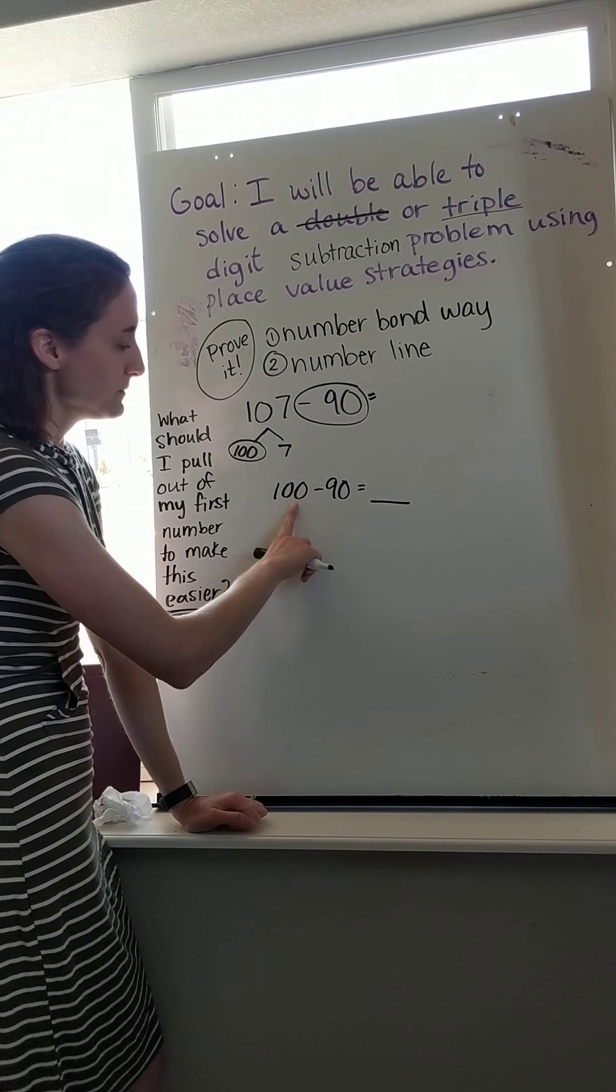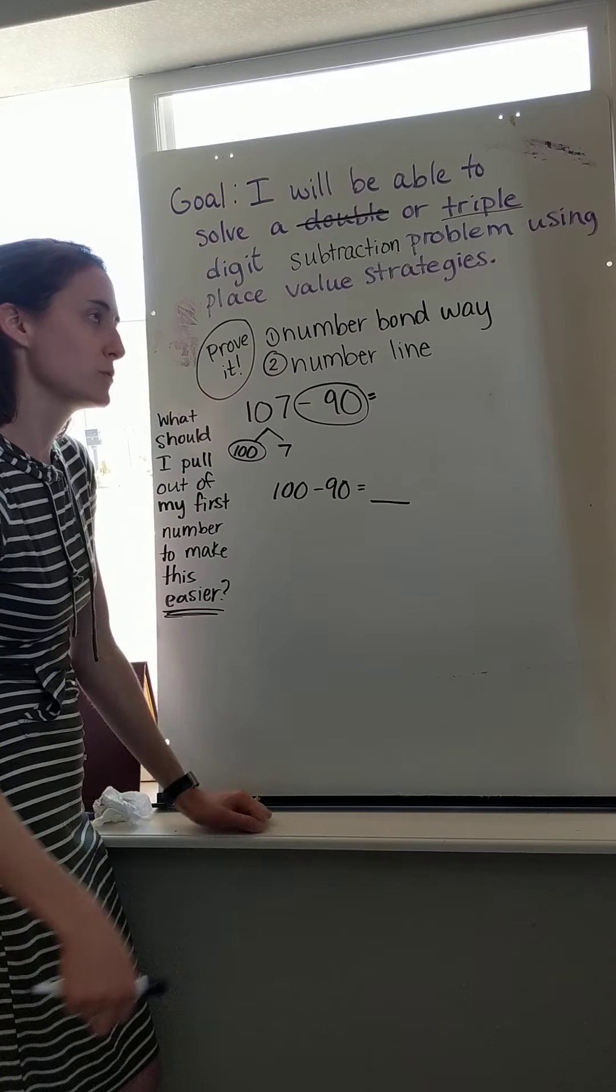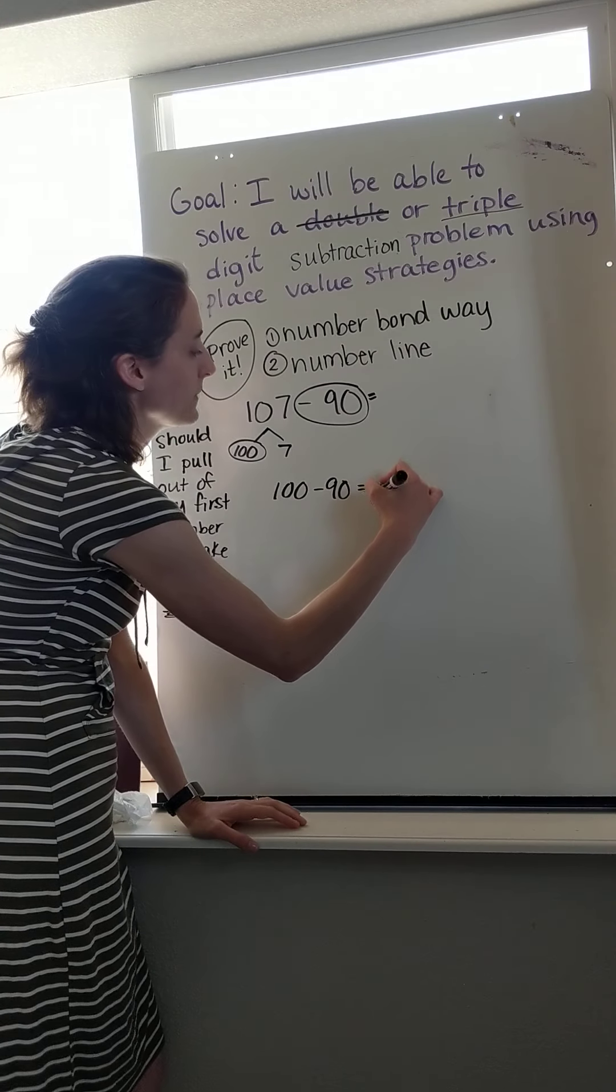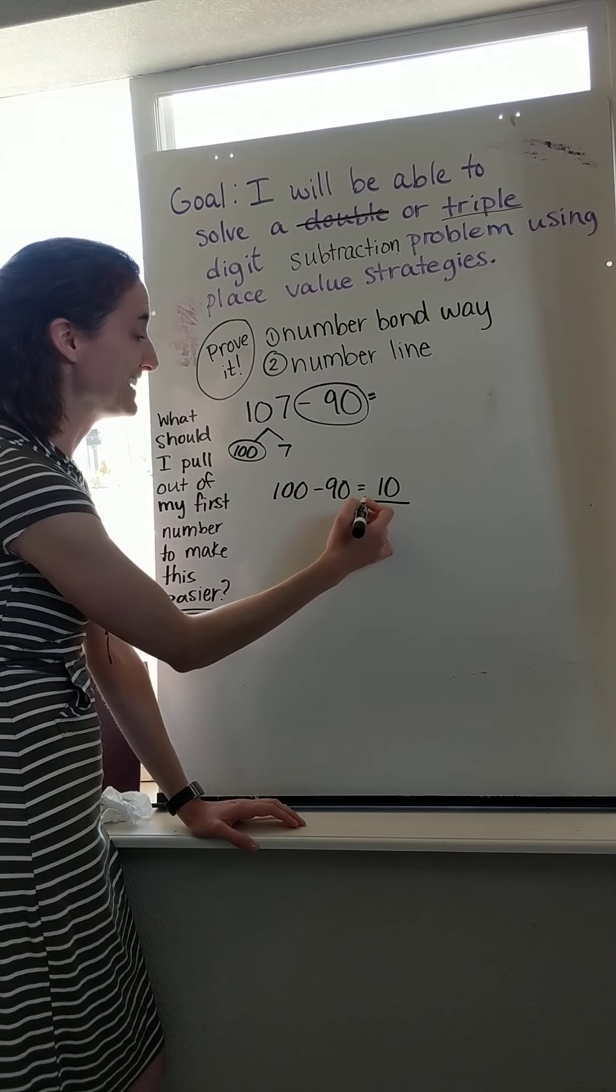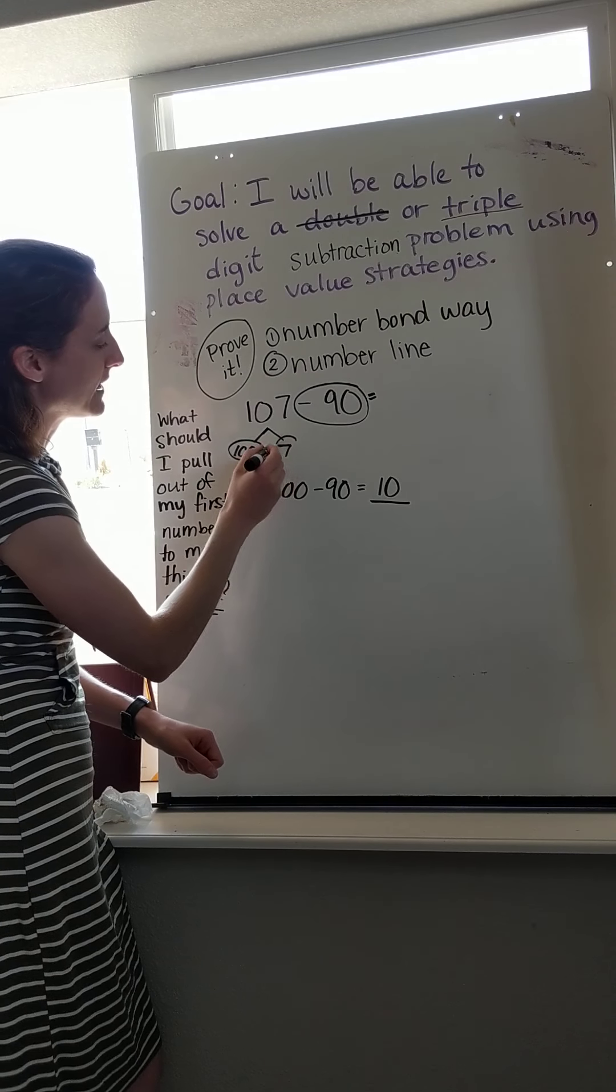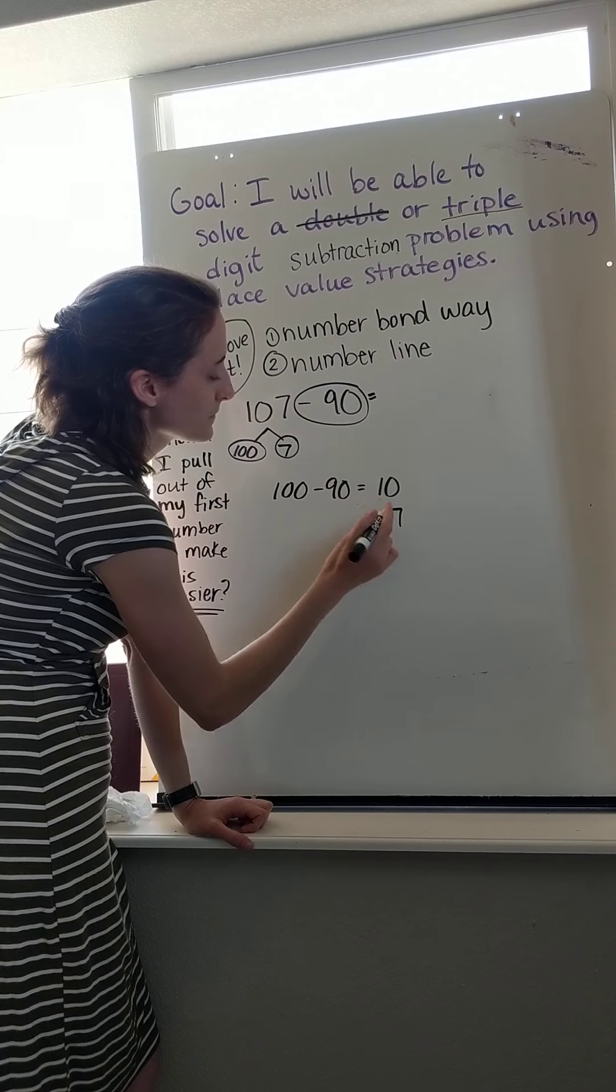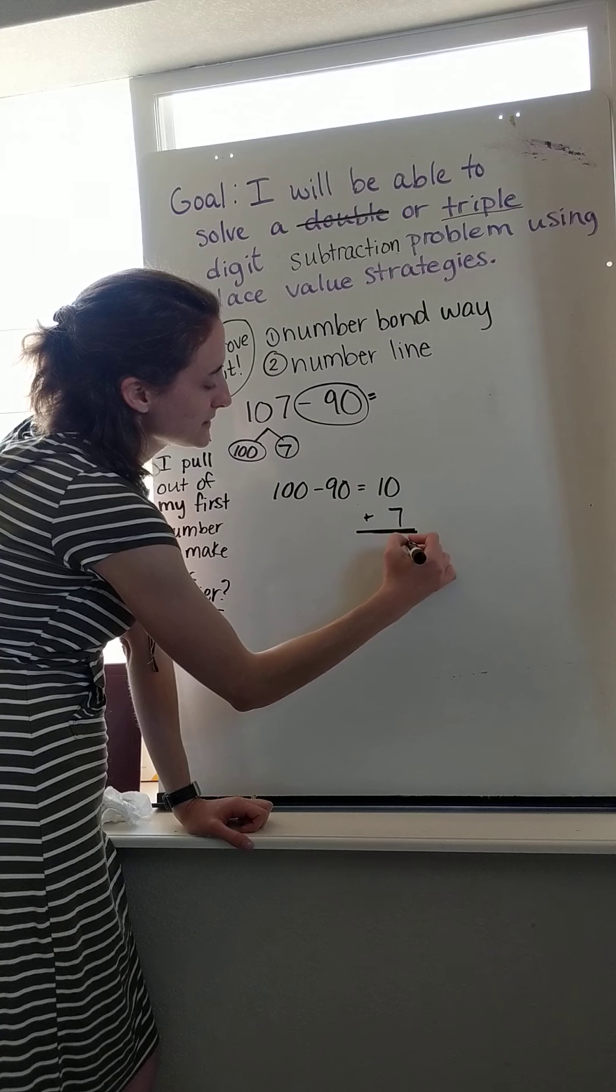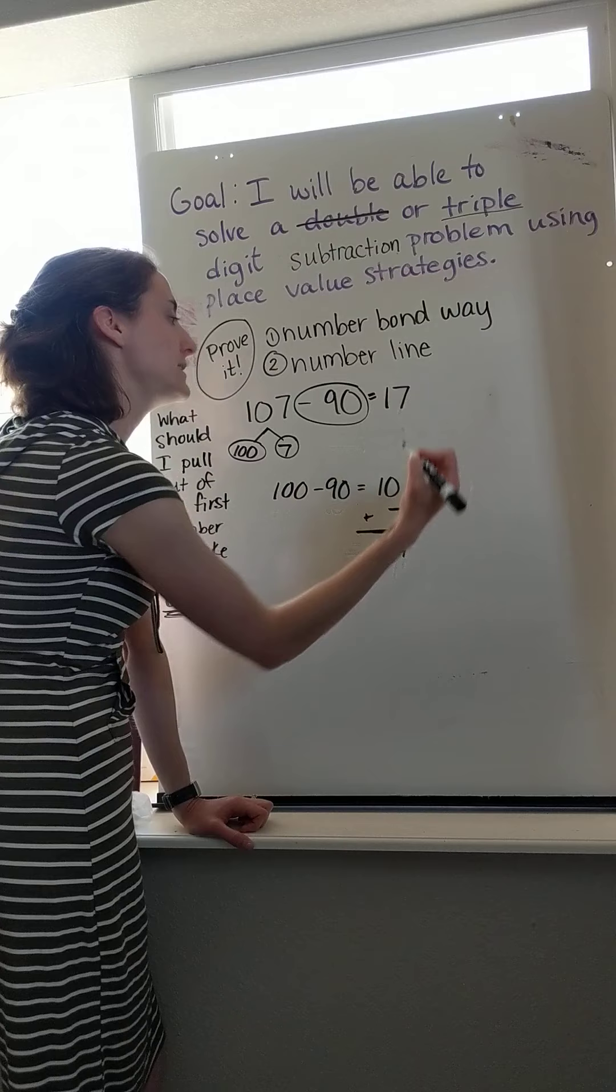Well, if I think of the part of 90, how much more do I need to make 100? 90 and 10 more makes 100. So 100 minus 90 equals 10. Then, I know I have 7 ones that I still need to add back. So I add my 7 ones back. And that makes a 7 in my ones place and a 1 in my tens place. I know my answer is 17.